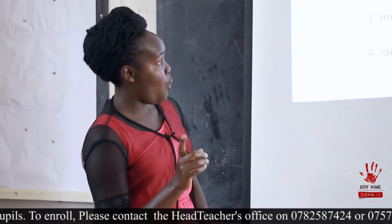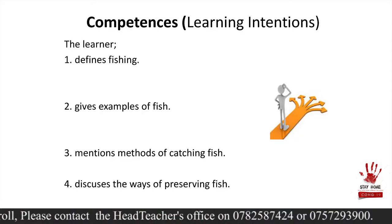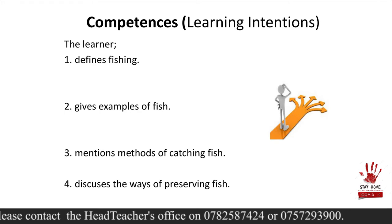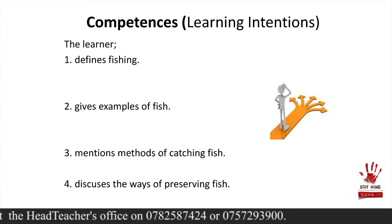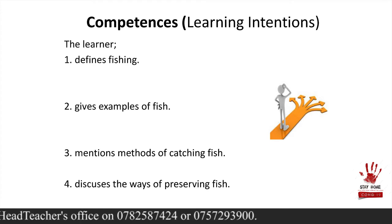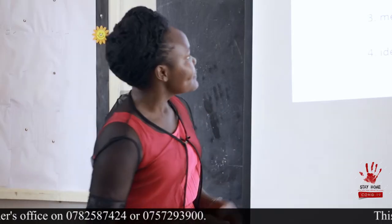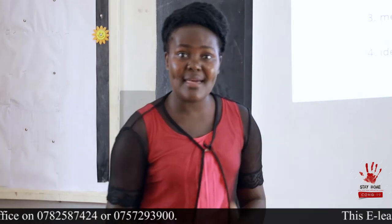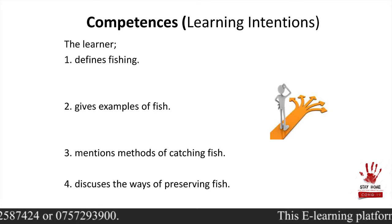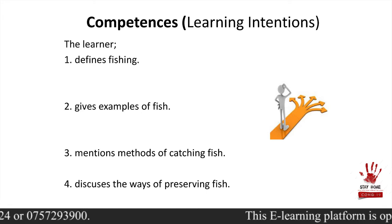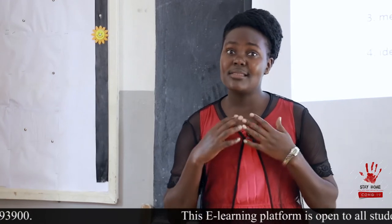By the end of this lesson, you must be able to define fishing — it won't be hard, trust me, it will be the easiest. Next, you'll be able to give the types of fish because we are going to learn them. You will also be able to mention the methods of fishing, since some of you are planning to be fishermen or have relatives who do this economic activity. Lastly, you'll be able to identify places where fishing is done.